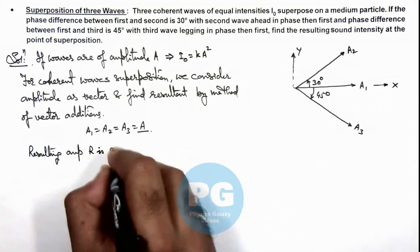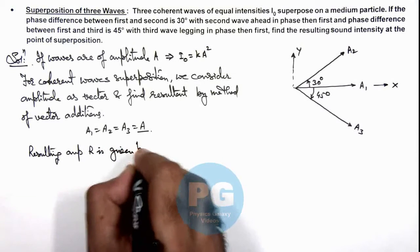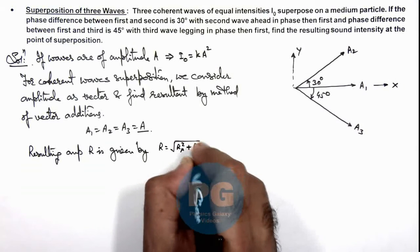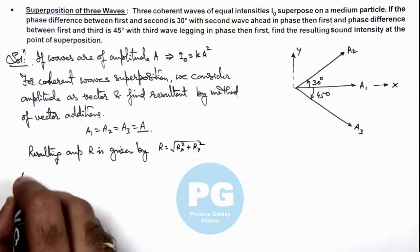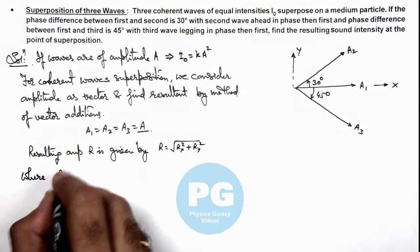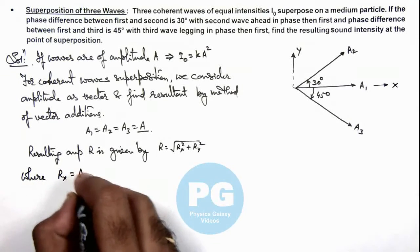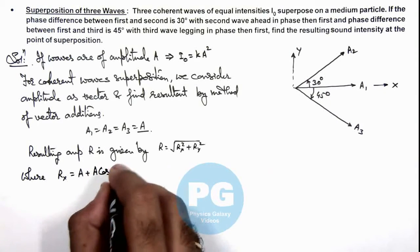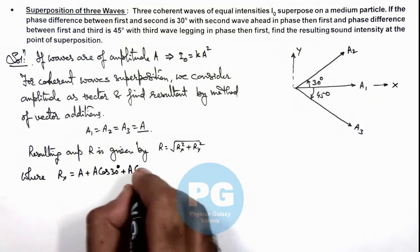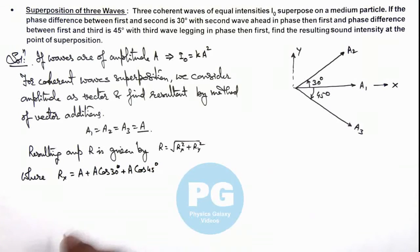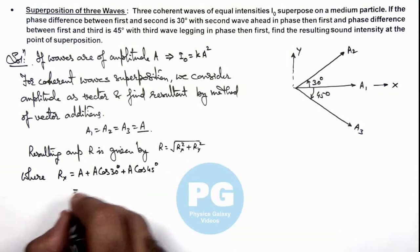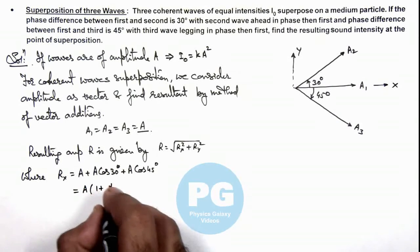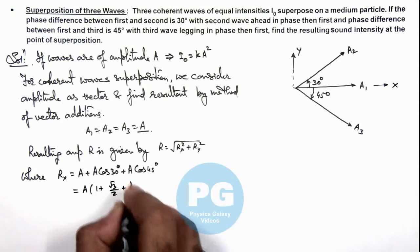R is given by root of Rₓ² plus Rᵧ². The value of Rₓ we can write as A plus A cos 30° plus A cos 45°, which gives us a value A multiplied by (1 + √3/2 + 1/√2).